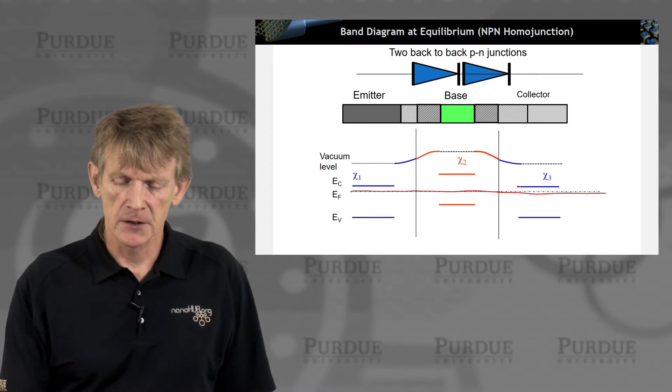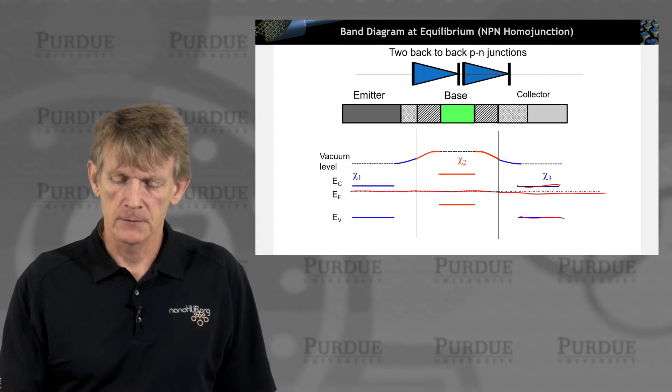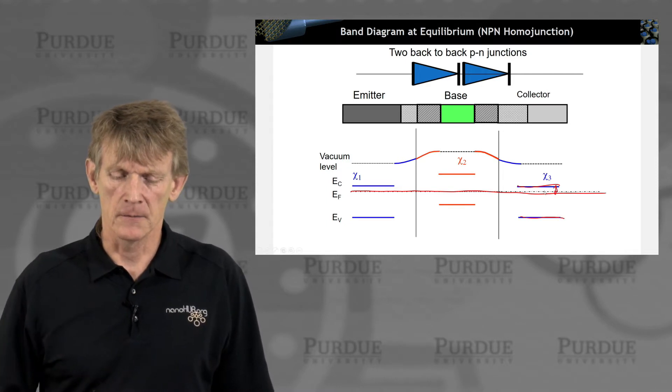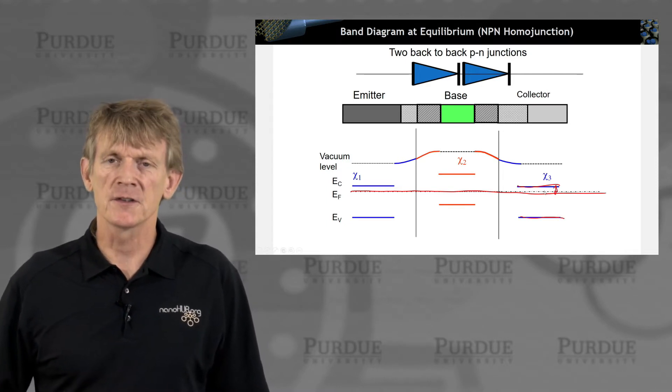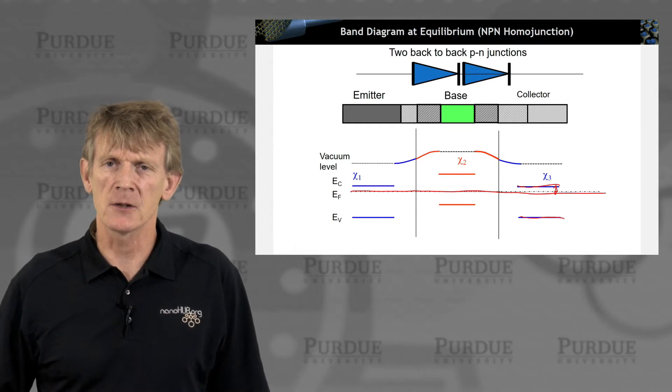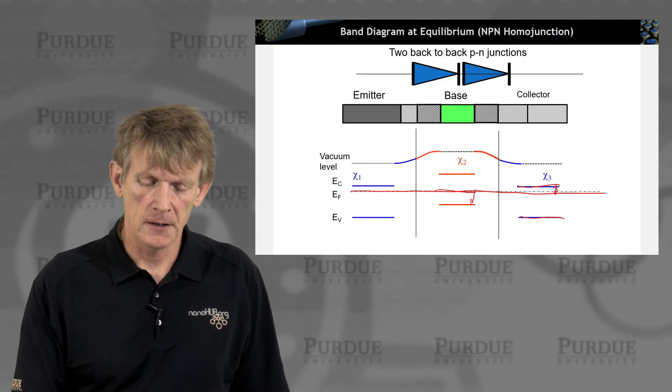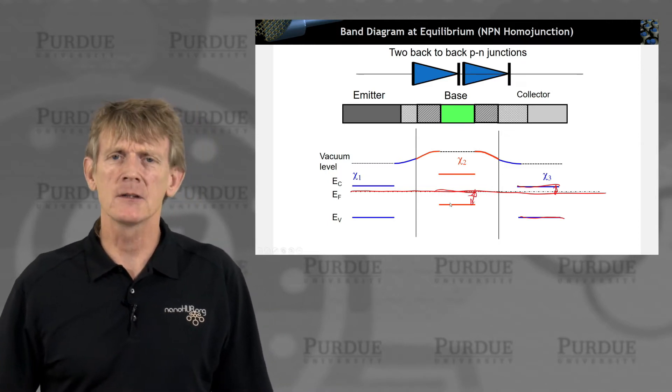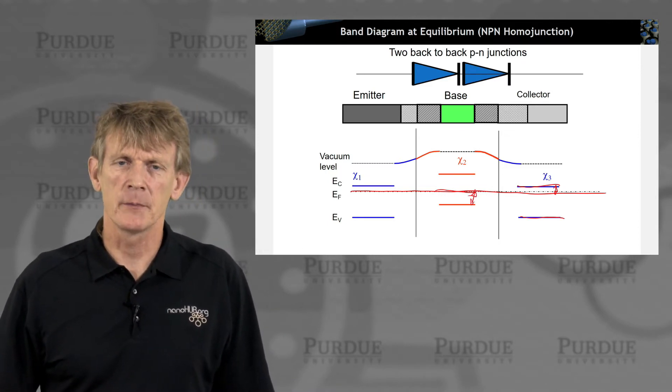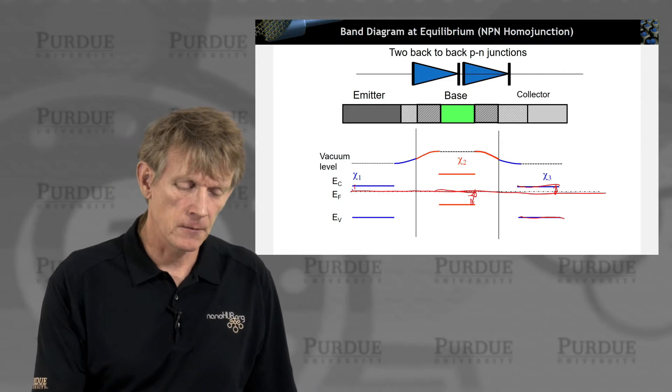you start drawing the individual band edges and calculate the difference from the Fermi level to the conduction band here. You do the same for a base. You calculate here how far the Fermi level is from the valence band, and you do the same thing here.